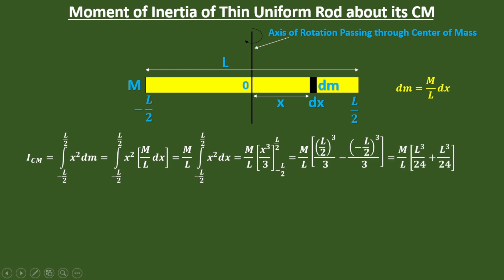Now for simplification, we will get L cubed over 24 plus L cubed over 24 inside the bracket. Further, if you take the sum, it will be 2 L cubed over 24, and if you simplify we will get ML squared over 12.